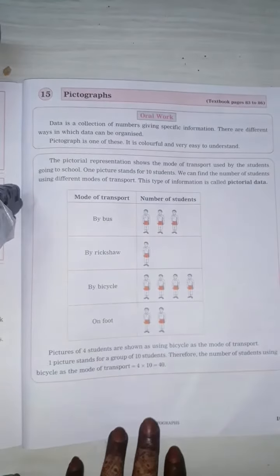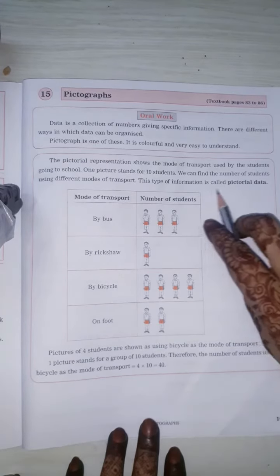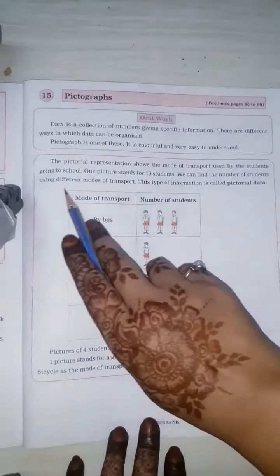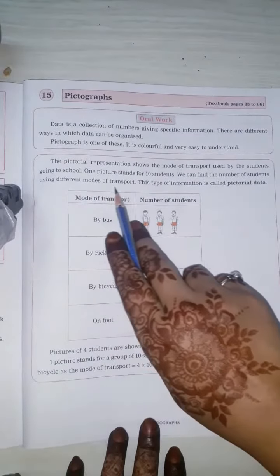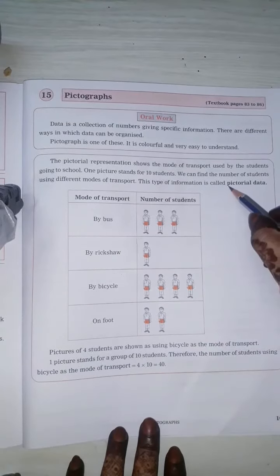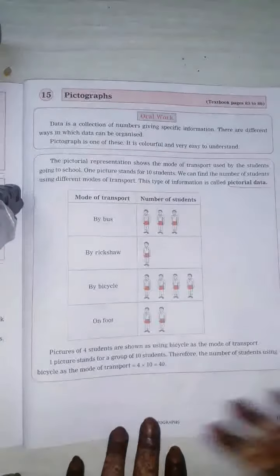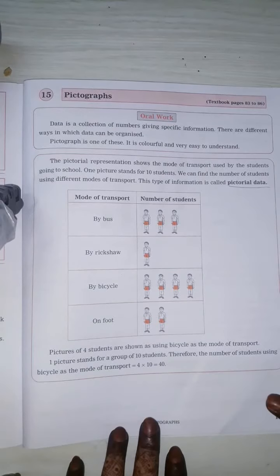A pictorial representation shows the mode of transport used by students going to school. One picture stands for 10 students. We can find the number of students using different modes of transport. This type of information is called pictorial data. This is one example that is given.